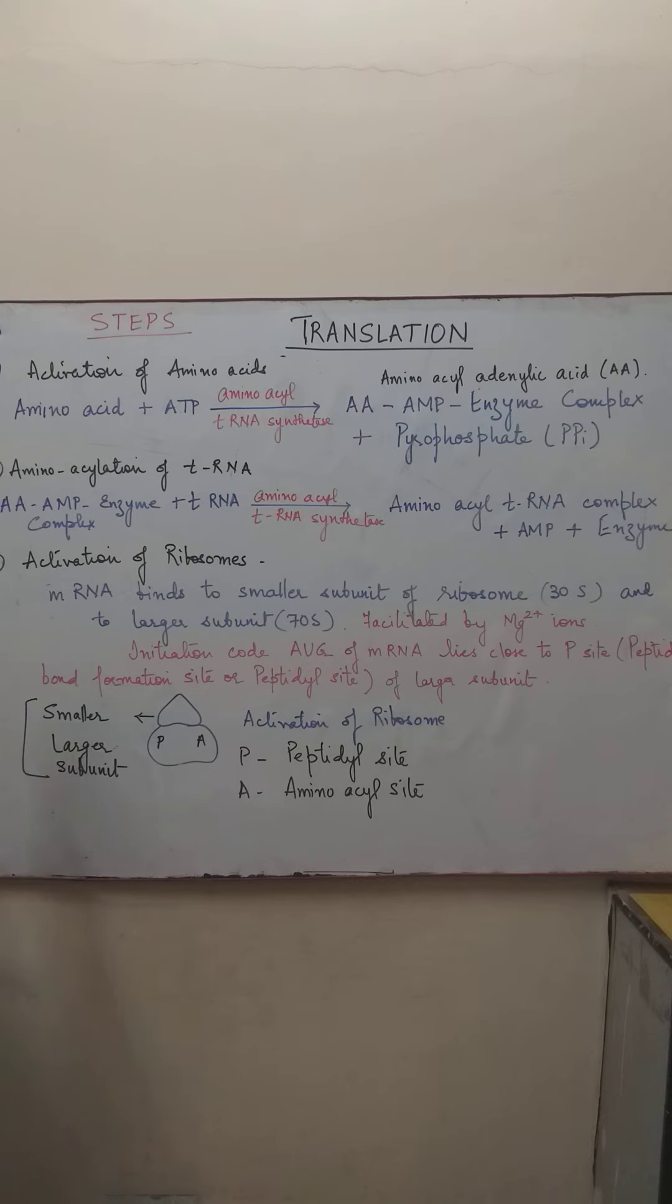The first step for translation is the activation of the amino acids. The amino acids are the building blocks of protein molecules. In this first step, the amino acid reacts with ATP in presence of an enzyme called aminoacyl tRNA synthetase, and it forms an activated form which is known as aminoacyl adenylic acid AMP.